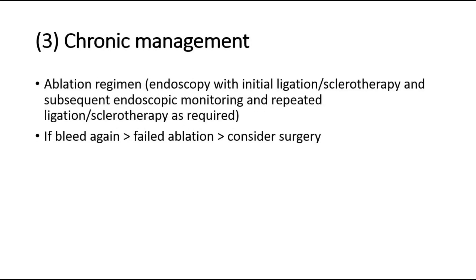The third part of management is chronic management, where we start the patient on an ablation regimen — endoscopy with initial ligation or sclerotherapy, followed by subsequent endoscopic monitoring and repeated ligation or sclerotherapy if required, on a case-by-case basis. If the patient bleeds again and ablation fails, surgery such as shunting can be considered. That's all for the management and for this video. Thank you.